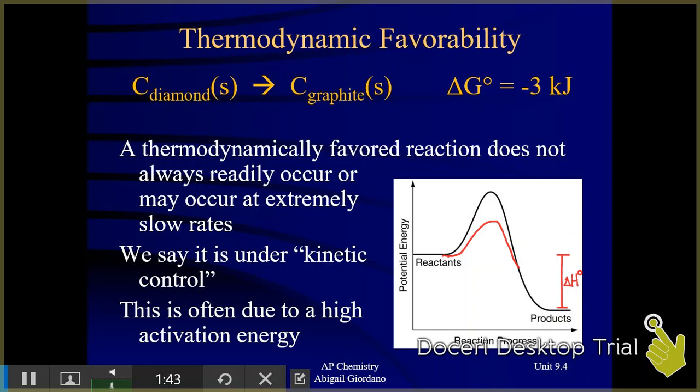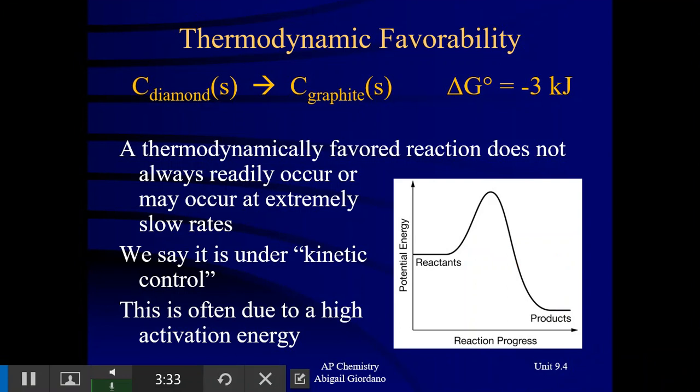Adding a catalyst does not make a reaction more favorable — it's not going to change the delta G value at all. All it's going to do is make it go faster. So keep in mind, favorability and speed of reaction are not connected.